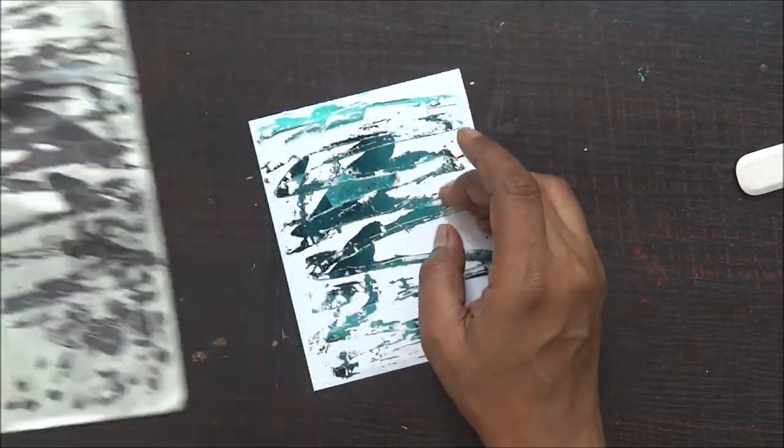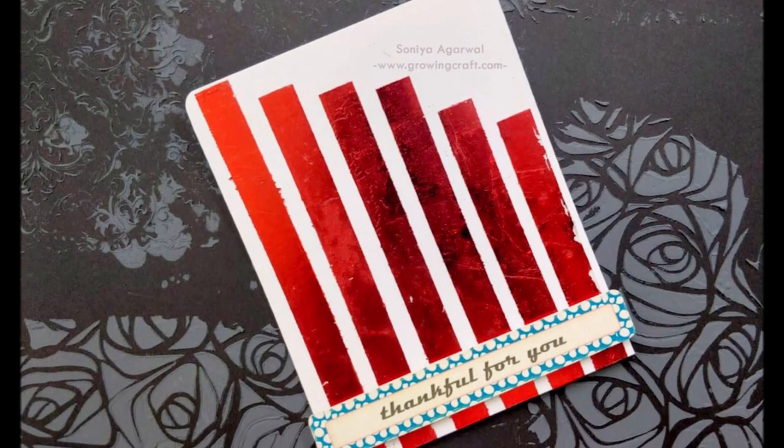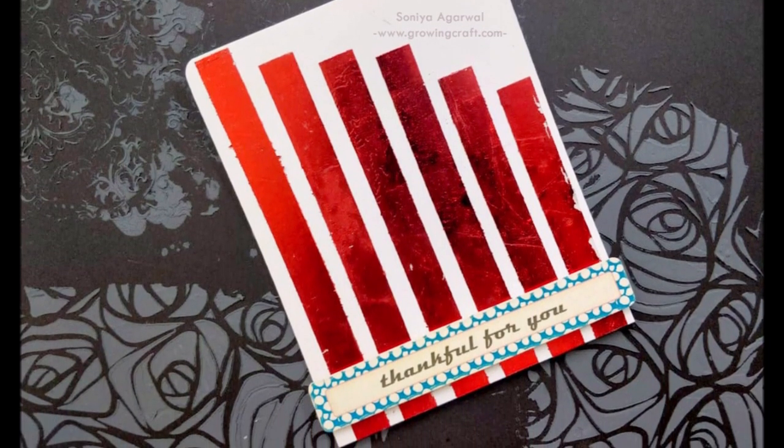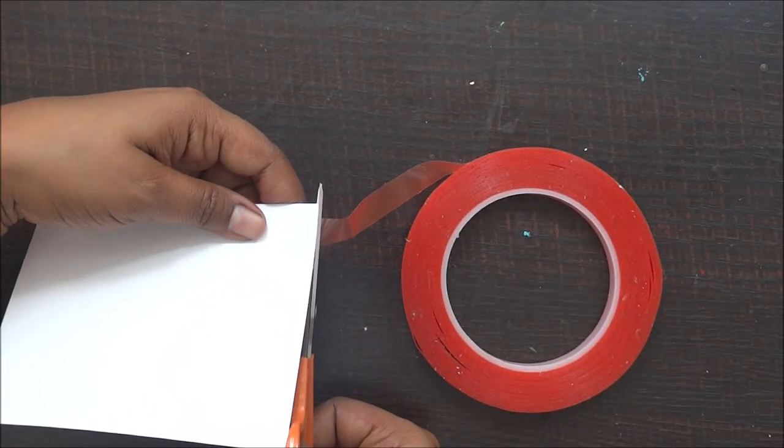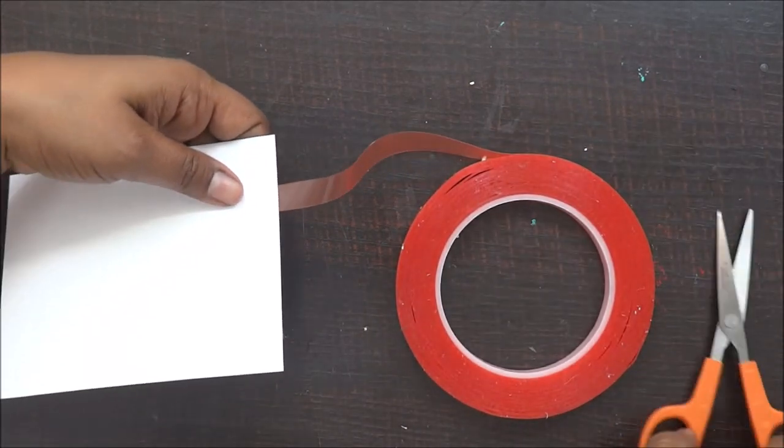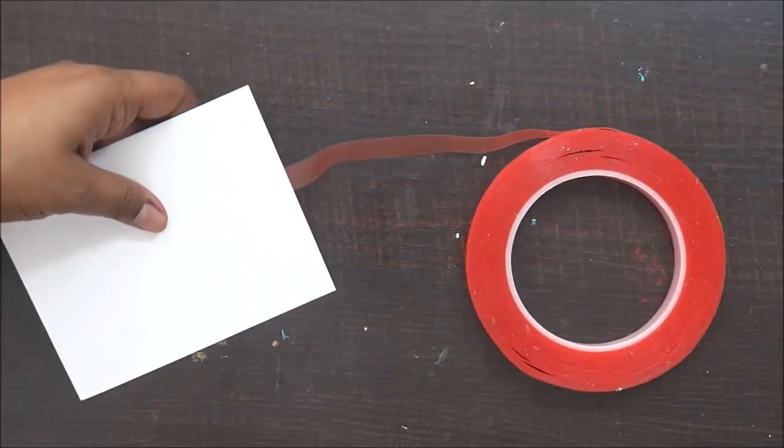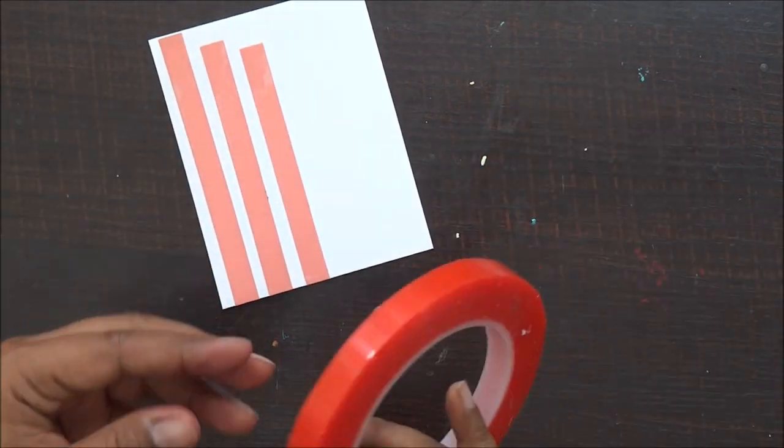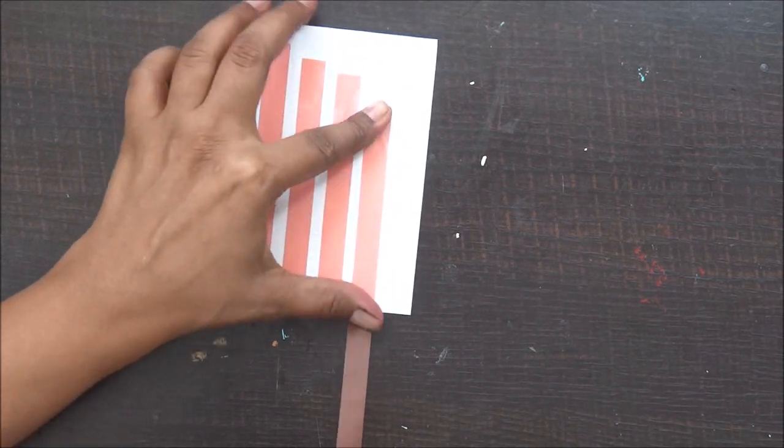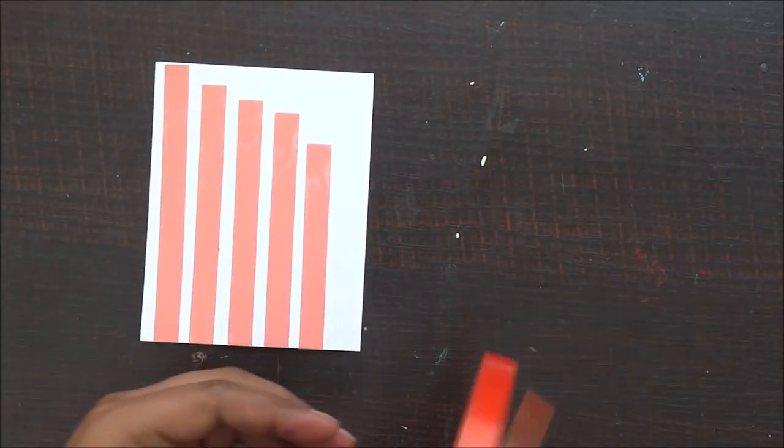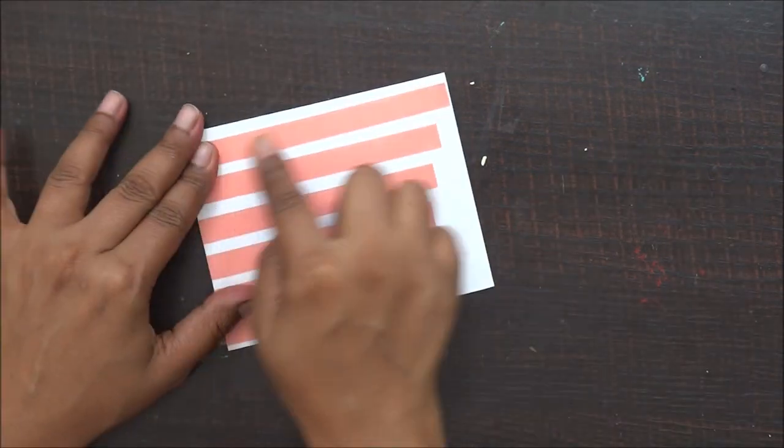The second way is using them with the tacky tapes. So here I have again used my tacky tape as an adhesive, the base adhesive, and I'm just going to stick it randomly. Here I have made a ladder kind of thing. This was just a random thought which I did while making this video and I am really happy with the way it has turned out. So I'm just going to stick my tacky tape on this cardstock and press it properly.